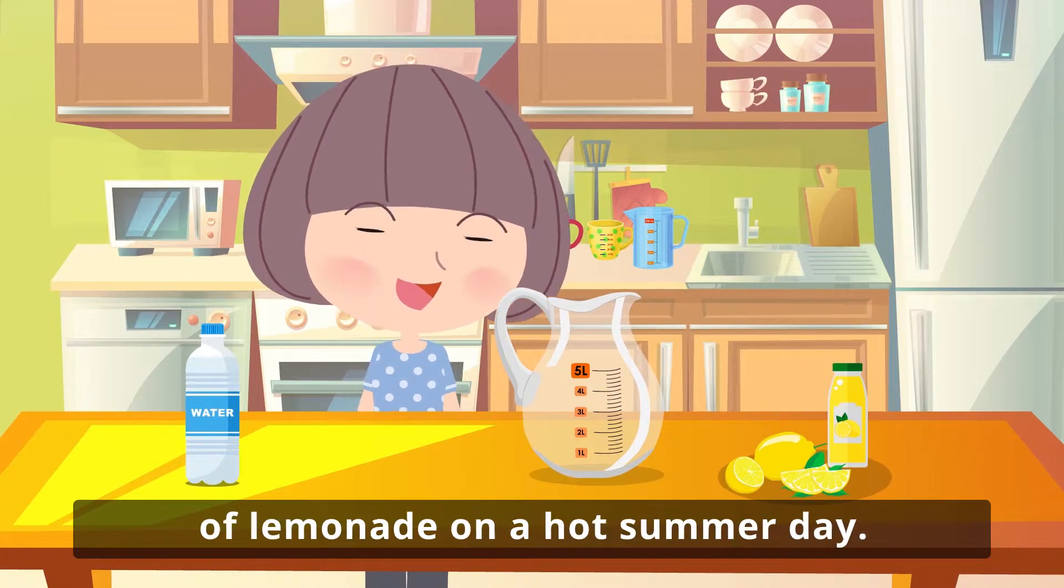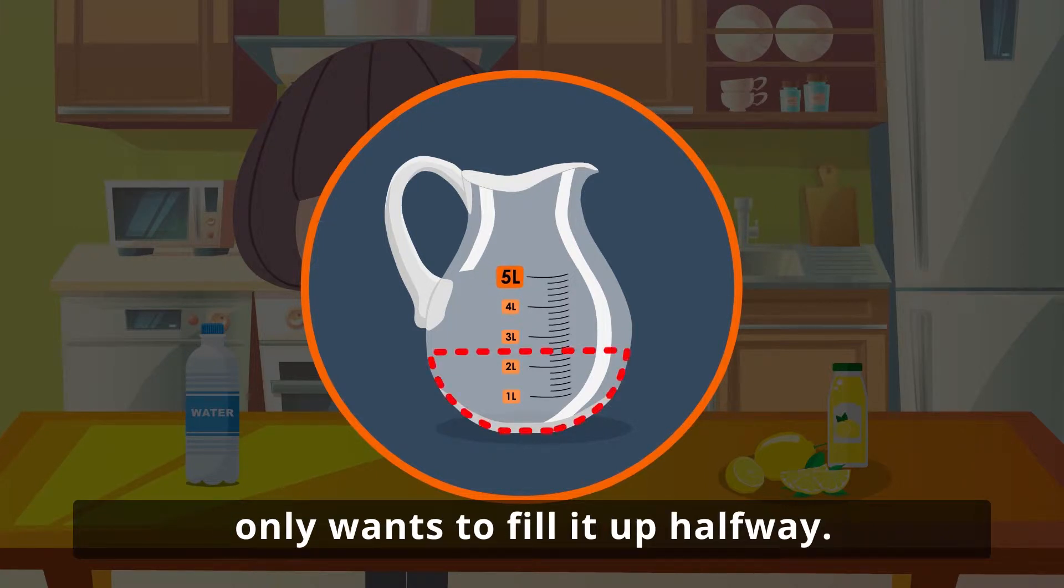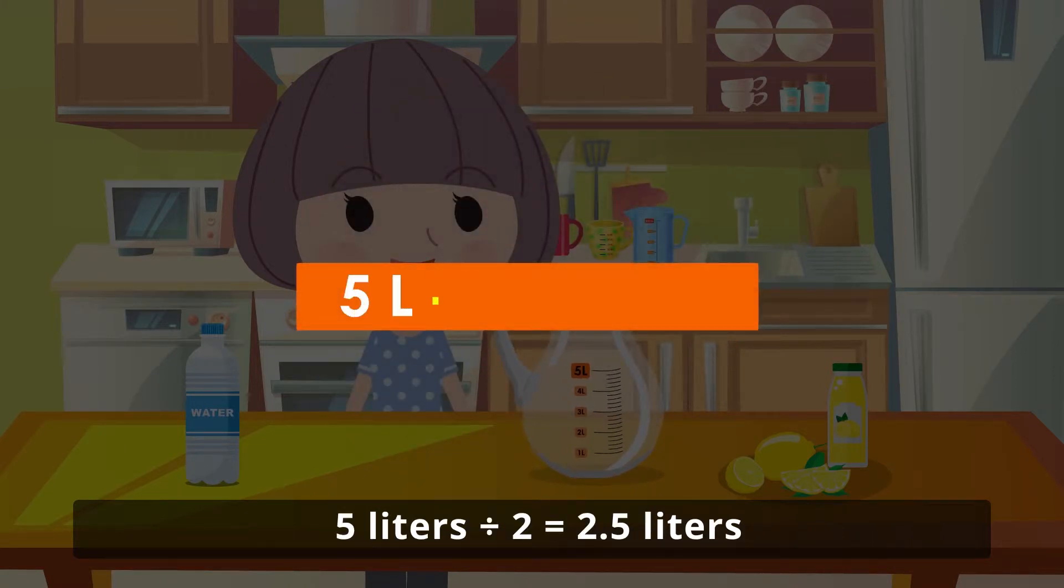Dominique is making a big pitcher of lemonade on a hot summer day. Her pitcher holds 5 liters, but she only wants to fill it up halfway. She writes a division problem including the units: 5 liters divided by 2 equals 2.5 liters.